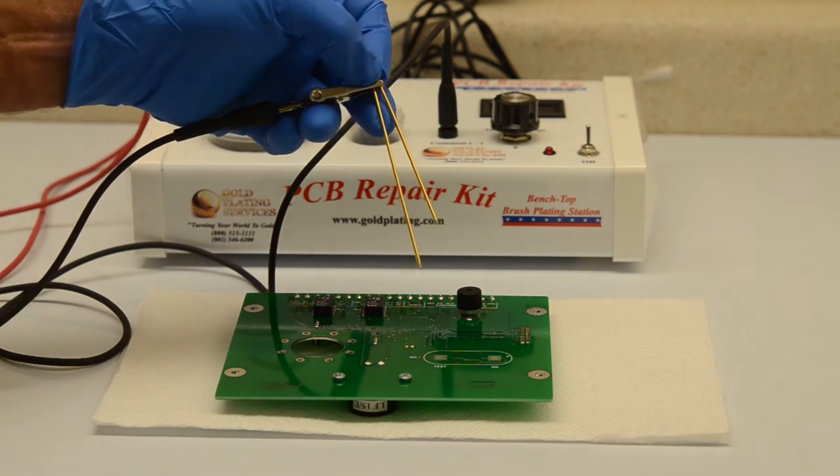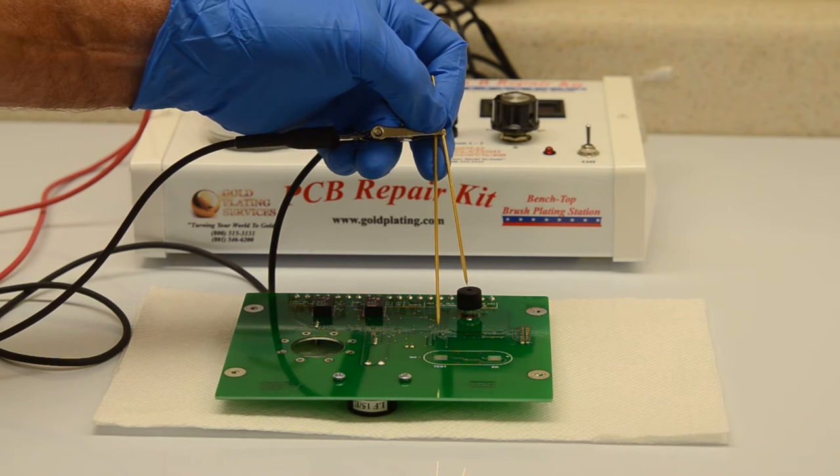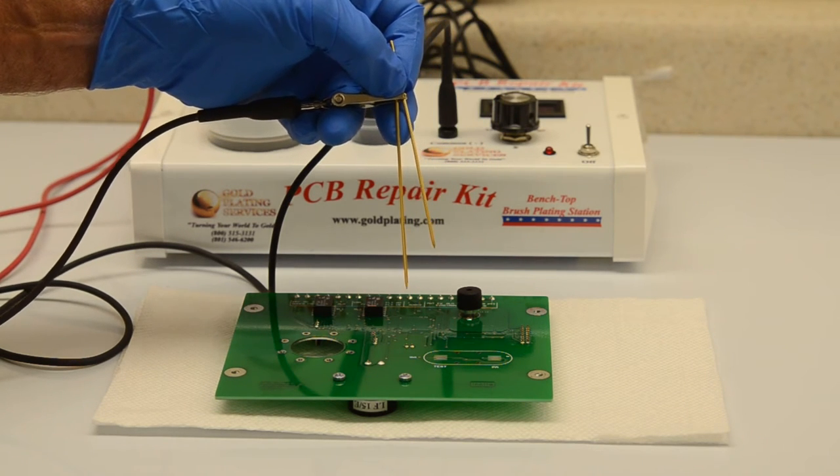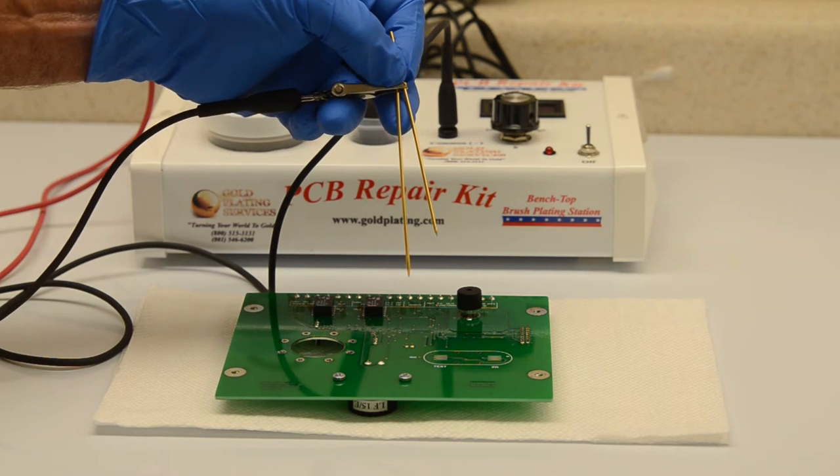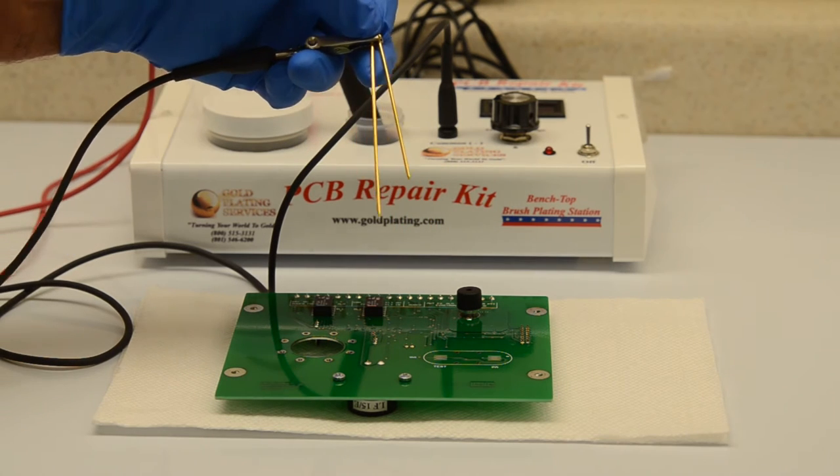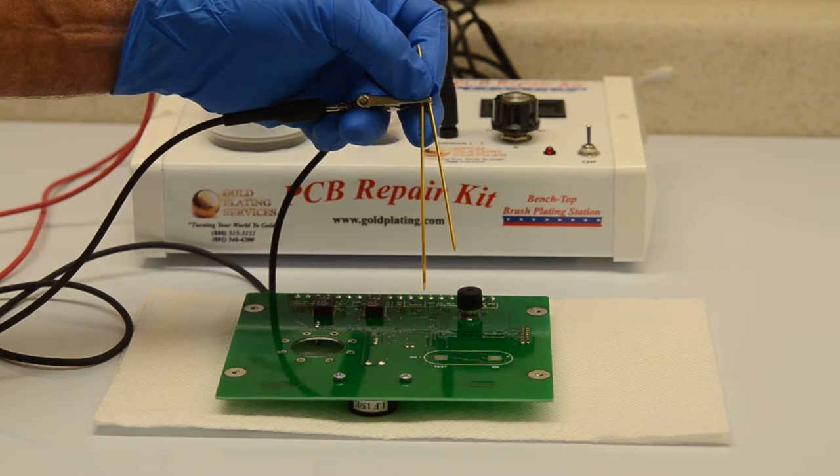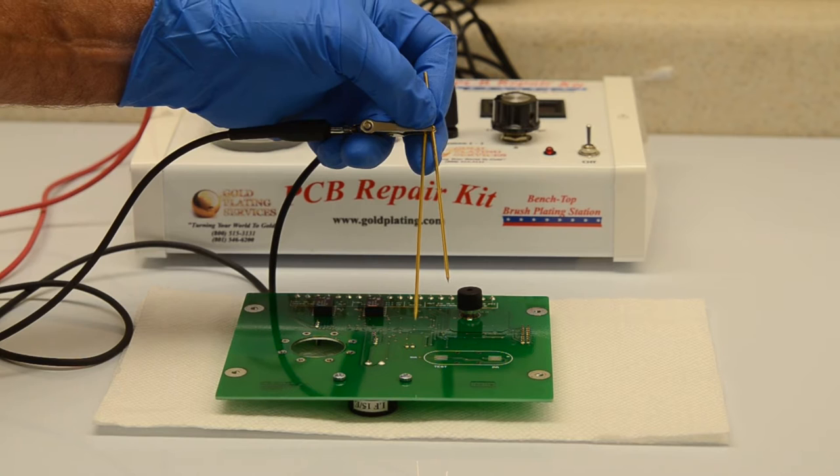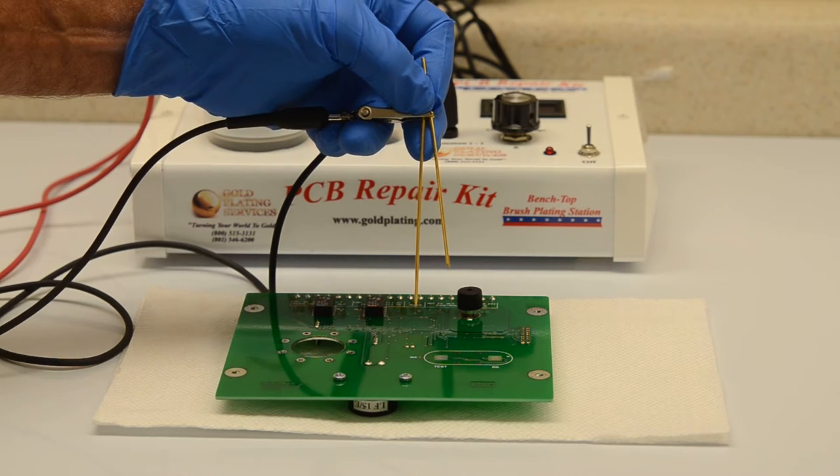There are two traces. We'll zoom in in a minute. A left and a right trace, and each trace has two different conductive elements, so we're going to use two of the gold-plated stainless steel probes to make contact with both conductive elements of each trace.